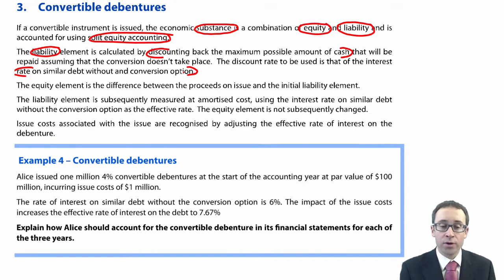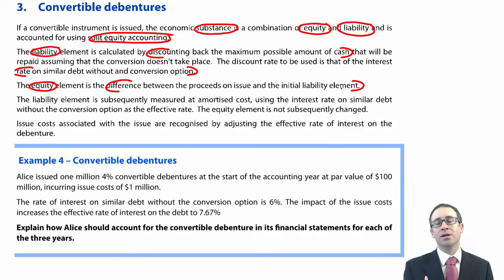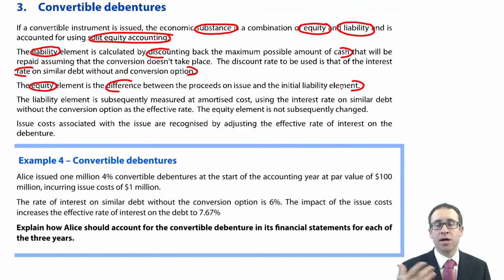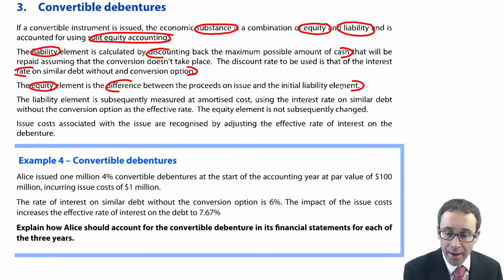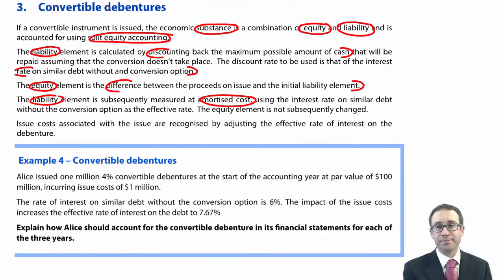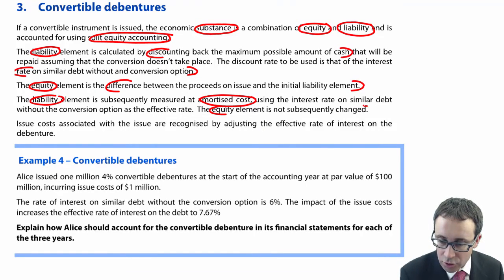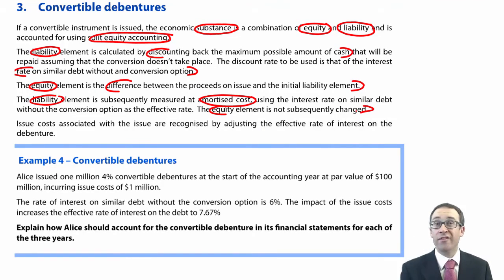What you then go through and do is work out the equity. You just work out the difference between the proceeds and the initial debt element. So once you've worked out what the debt is, you know how much cash you've raised, you subtract one from the other and that gives you the entry to your equity. The liability is measured at amortised cost, and the equity element is not subsequently changed — we just leave it there essentially.